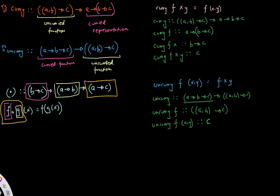Just to put things more clearly: this value X has a type belonging to type variable A. Whatever F of G of X produces has a type corresponding to C. That's a quick one-minute review of function composition.